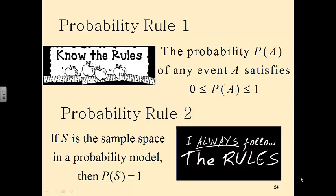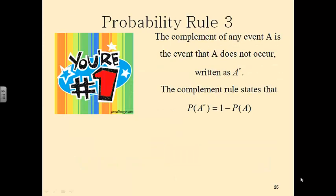Probability rule number two: if S is the sample space — and remember, a sample space is a listing of everything that can possibly occur in this event — then the probability of the sample space has to be one, because the sample space is everything that could possibly happen.